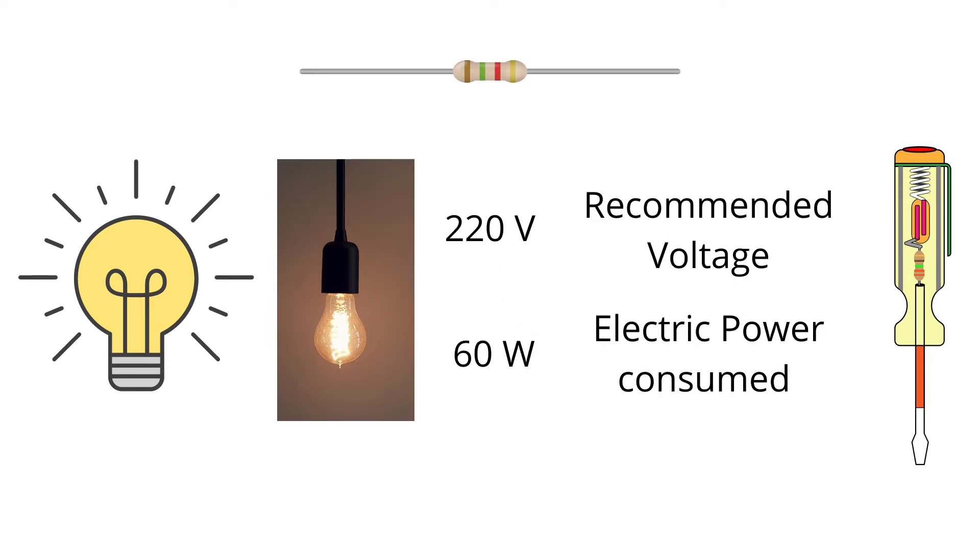In our example for the electric bulb, the recommended voltage is 220 volts, and when it is used at 220 volts, the electric bulb will consume 60 watts of electric power.